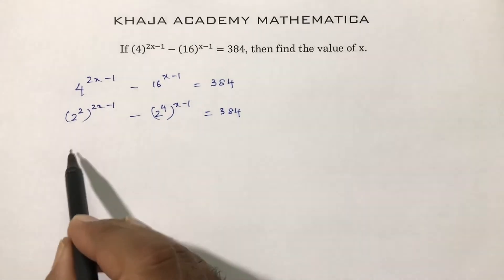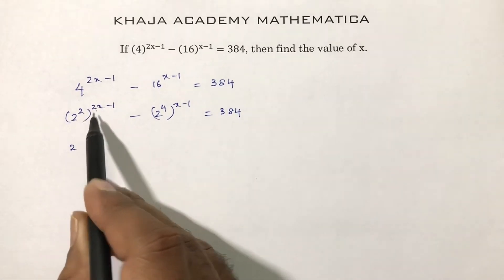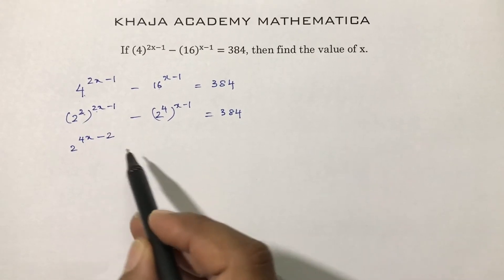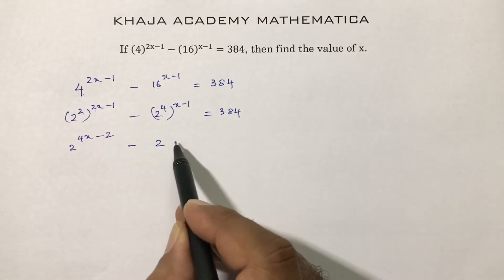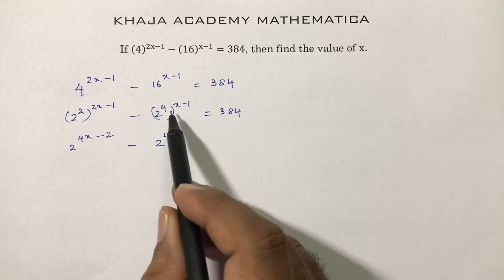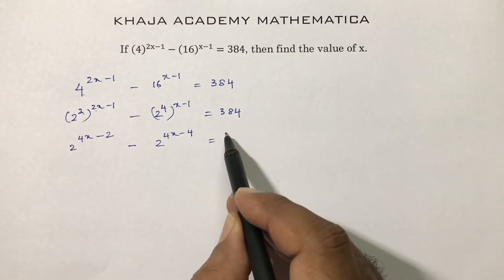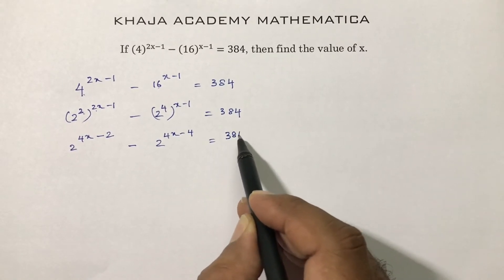Now 2 power 2 into 2, that is 4x minus 2 into 1 minus 2, minus 2 power 4x minus 4 into 1 is minus 4, equals 384.